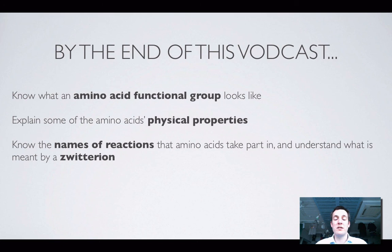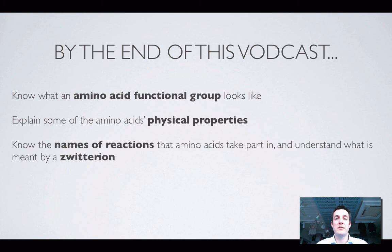Apart from the condensation reactions to be covered later, that's really about it for amino acids. You should now know what an amino acid functional group looks like, be able to explain its physical properties — why it has such a high melting and boiling point and why it is so soluble in water — and understand what we mean by a zwitterion. If anything confused you or you'd like to ask about it, please feel free to let me know or post a comment on YouTube. Thank you.